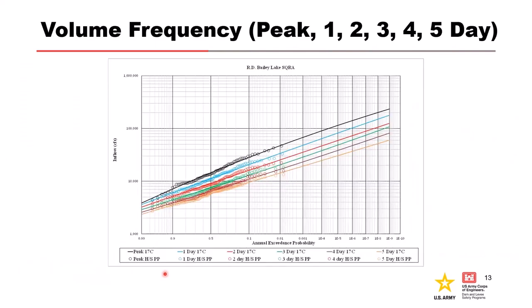Here we have plotted a comparison of volume frequency curves. The curves for different durations run about parallel to each other. We didn't do any statistical curve smoothing. Looking at peak through five-day, they didn't cross and were running parallel, so we didn't need to do anything like that.